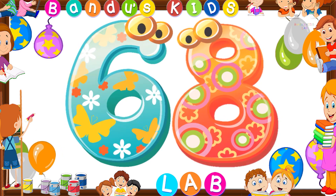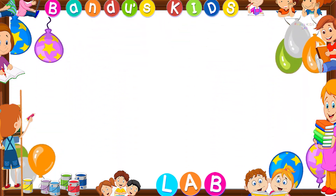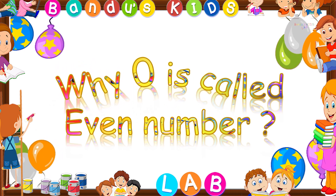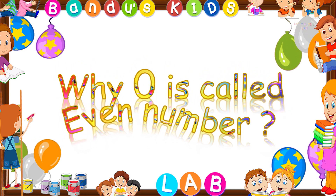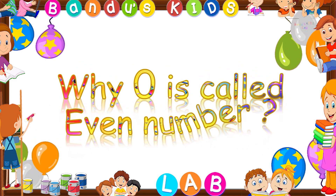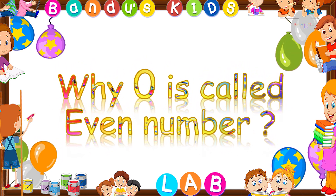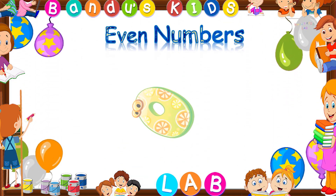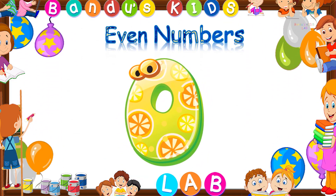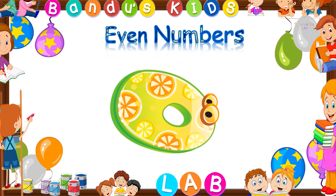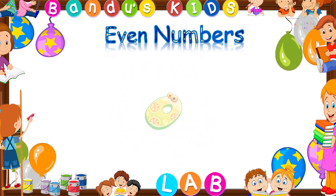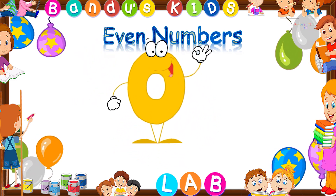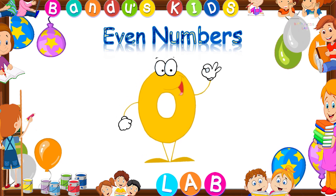Kids, you might be confused why zero is called an even number. It is because zero means nothing. If we divide zero into two parts, then we get zero. So mathematically, zero is an even number.